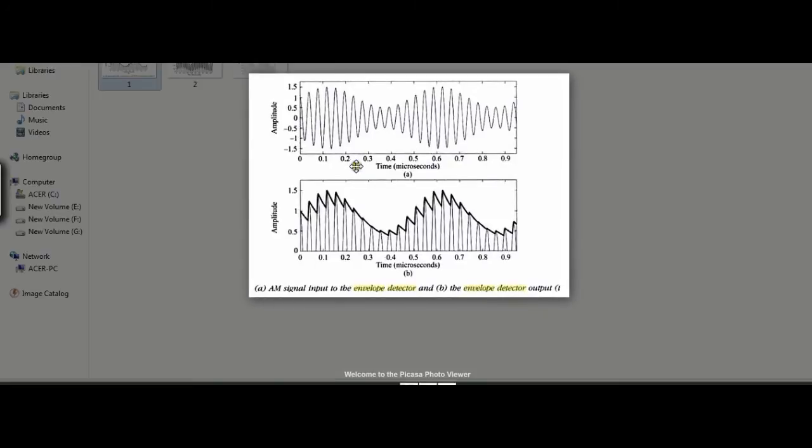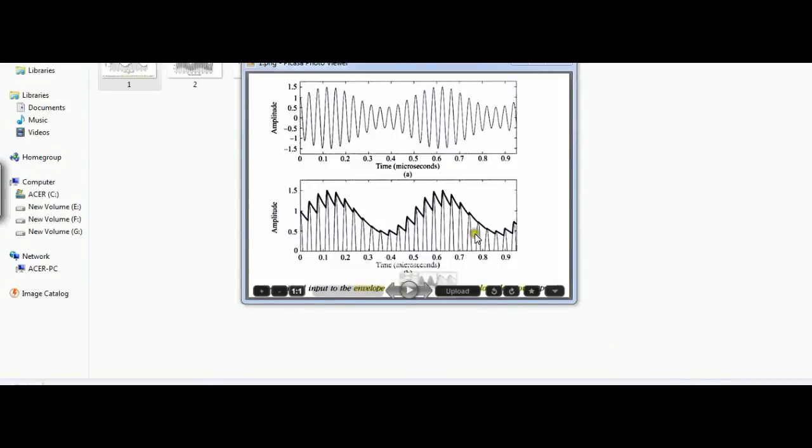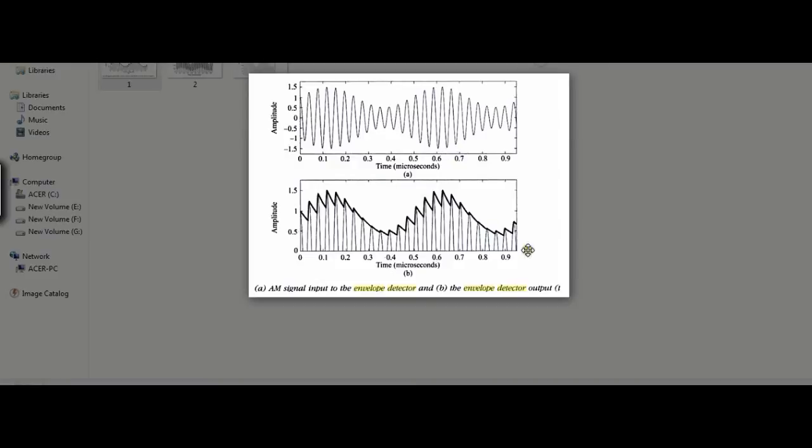Let me show you the three scenarios. This is the first scenario where R_L C is properly designed. That is it satisfies that equation. As you can see this is an AM wave and it is fed as an input to the envelope detector. This is the output which we get. As you can see we have traced the envelope of the AM signal. If you get envelope of AM signal, you can retrieve your message signal. You can retrieve the message signal in this case.